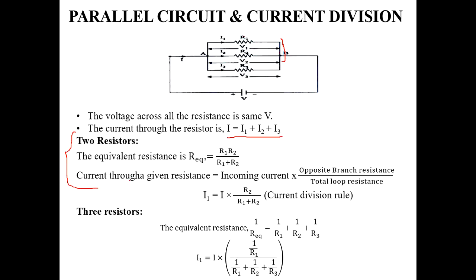For three resistors connected in parallel, 1 divided by R_eq equals 1 by R1 plus 1 by R2 plus 1 by R3. Using the current division rule for three resistors, the current through R1 equals total current times (1 divided by R1) divided by the sum of reciprocals of each resistor. The two-resistor formula applies only when two resistors are in parallel.